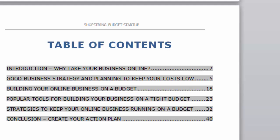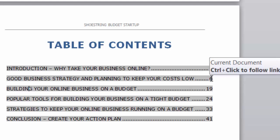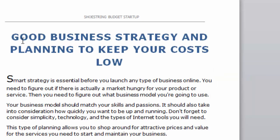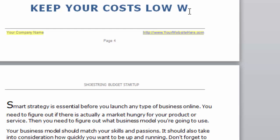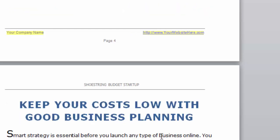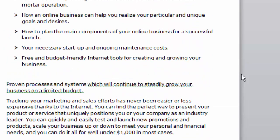I'm going to undo what I just did — you can see it goes back to six. So let's go back to this section that says "Good Business Strategy and Planning to Keep Your Costs Low." That's a pretty long title, so let's edit that. I'll change it to something like "Keep Costs Low with Good Business Planning." OK, so that changed the title, but let's do one more change and add a section as well.